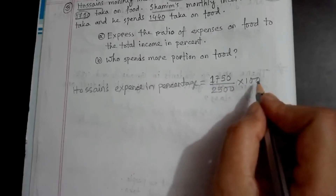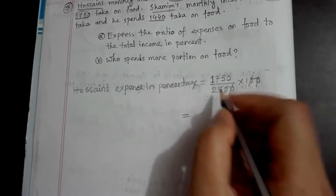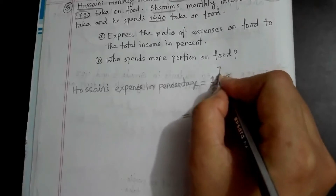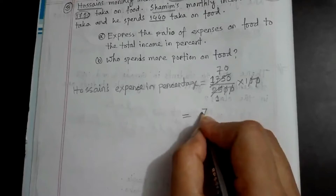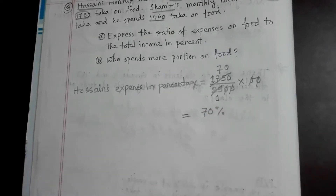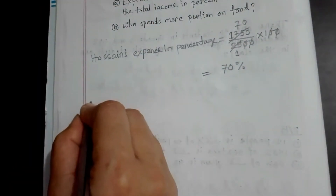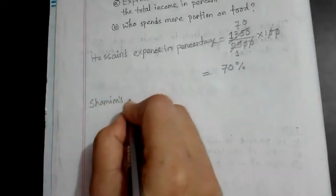Now we will get the percentage. Now look here: 1,750 divided by 25,000 multiplied by 100. We will get 70 percent.